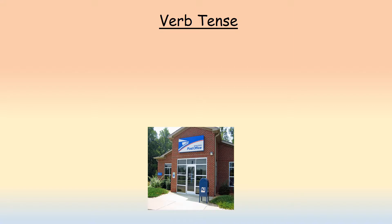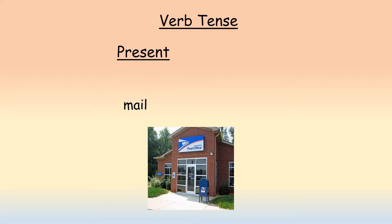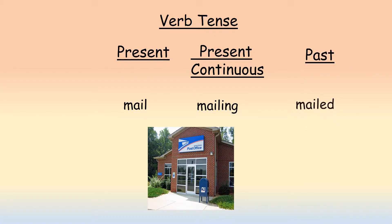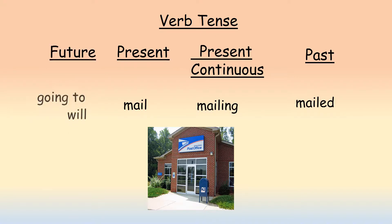Verb tense: present tense — 'mail'; present continuous — 'mailing'; past — 'mailed'; future — 'going to mail' / 'will mail'.